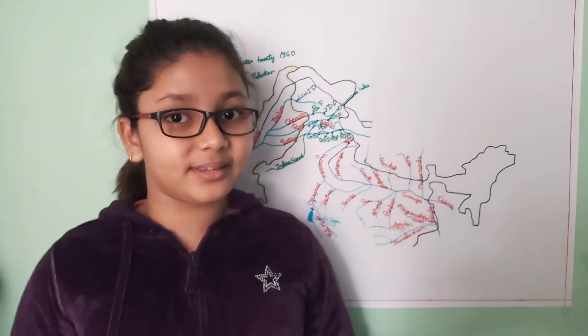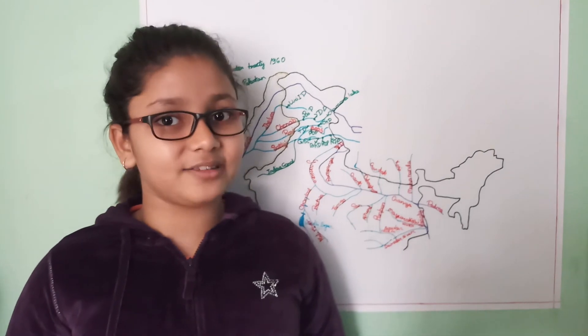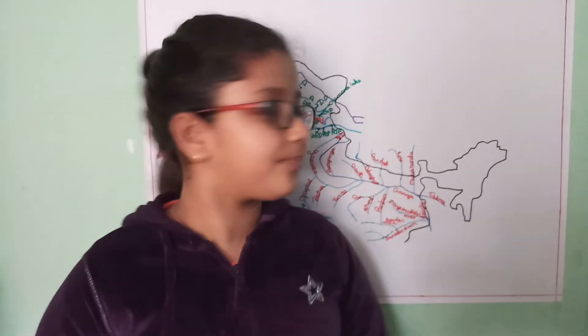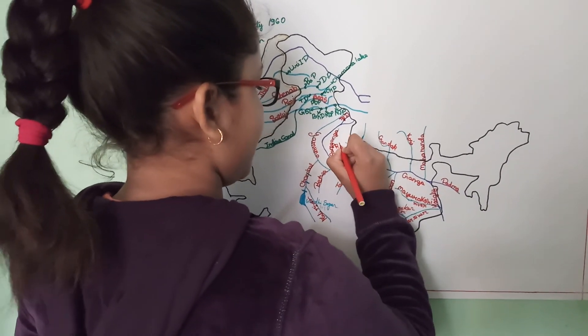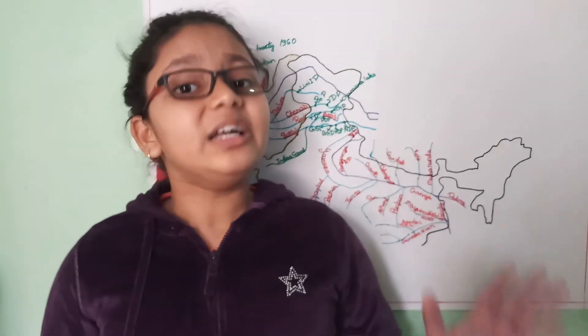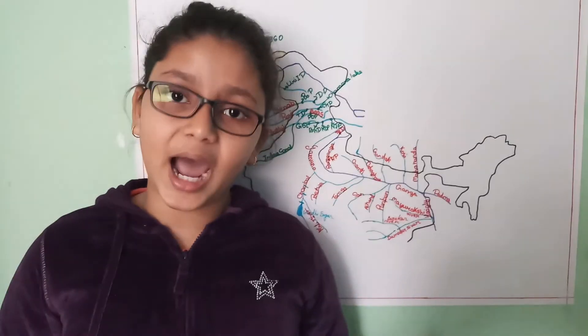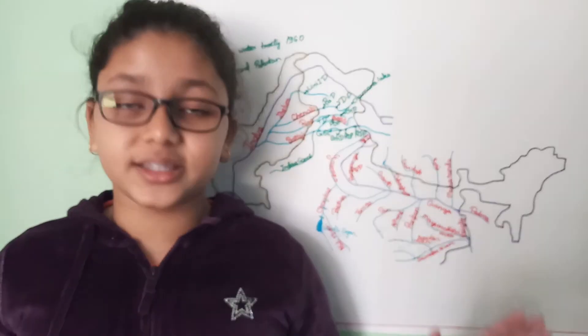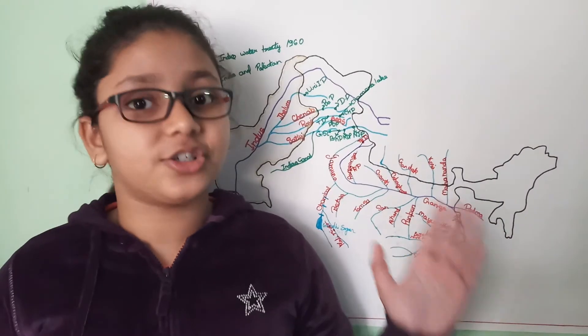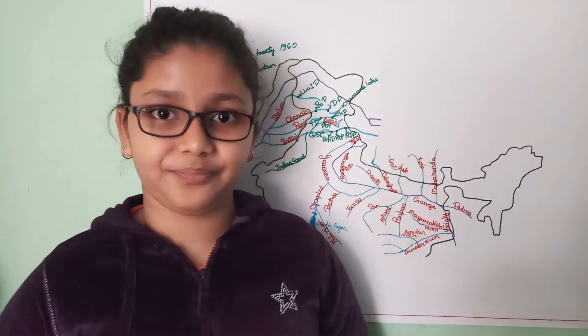Then comes the Ram Ganga project, which is constructed on the river Ram Ganga. Then comes the Tanakpur project, which is constructed on the river Kali, a tributary of the Yamuna.